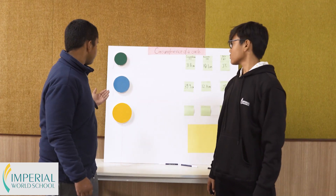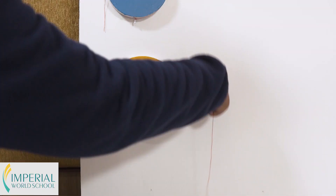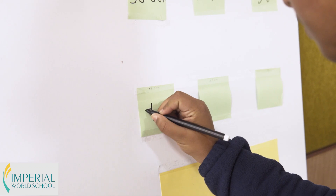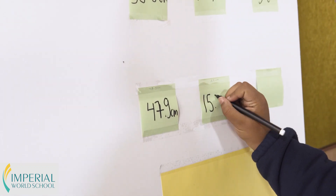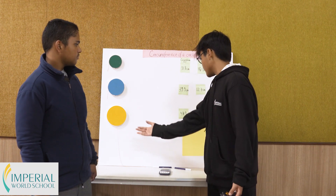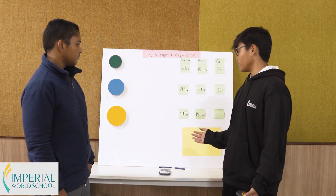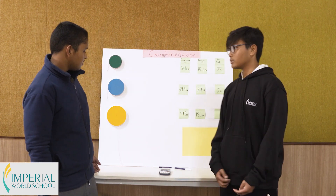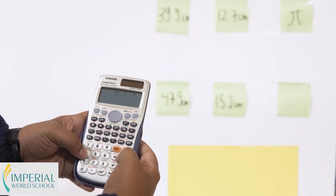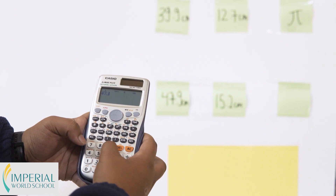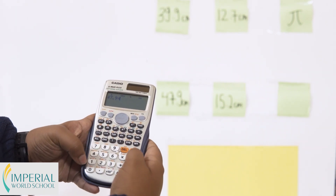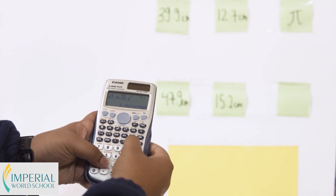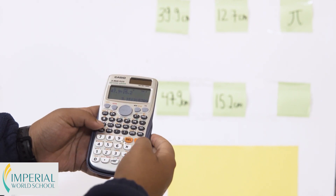Now finally, we're going to measure the circumference and diameter of this yellow circle. The circumference of the yellow circle is 47.9 centimeters and the diameter of this circle is 15.2 centimeters. Rivas, can you help me calculate the ratio of the circle? The circumference is 47.9 centimeters and the diameter is 15.2 centimeters. When we divide them, we get 3.1, which is the approximate value of pi.